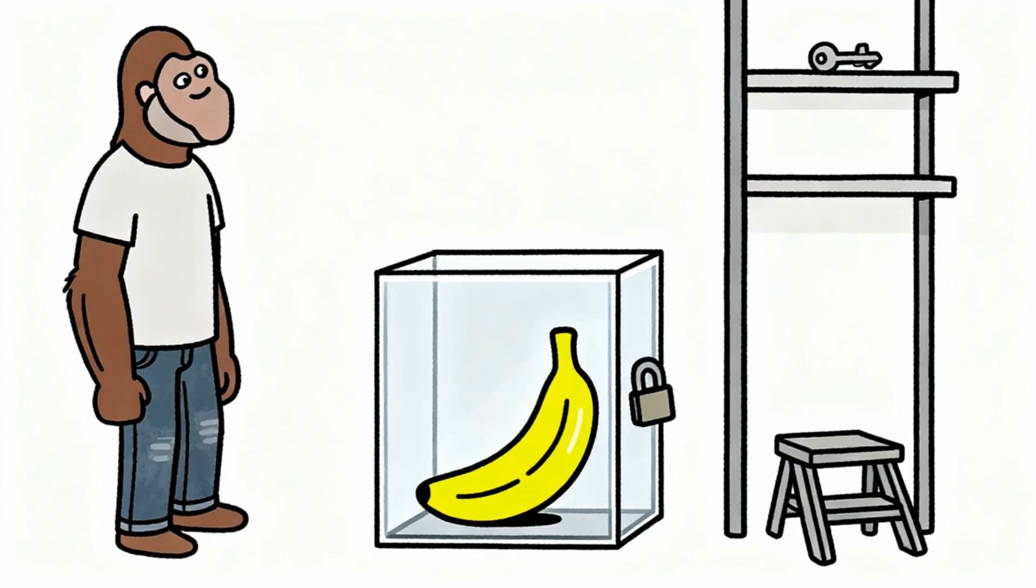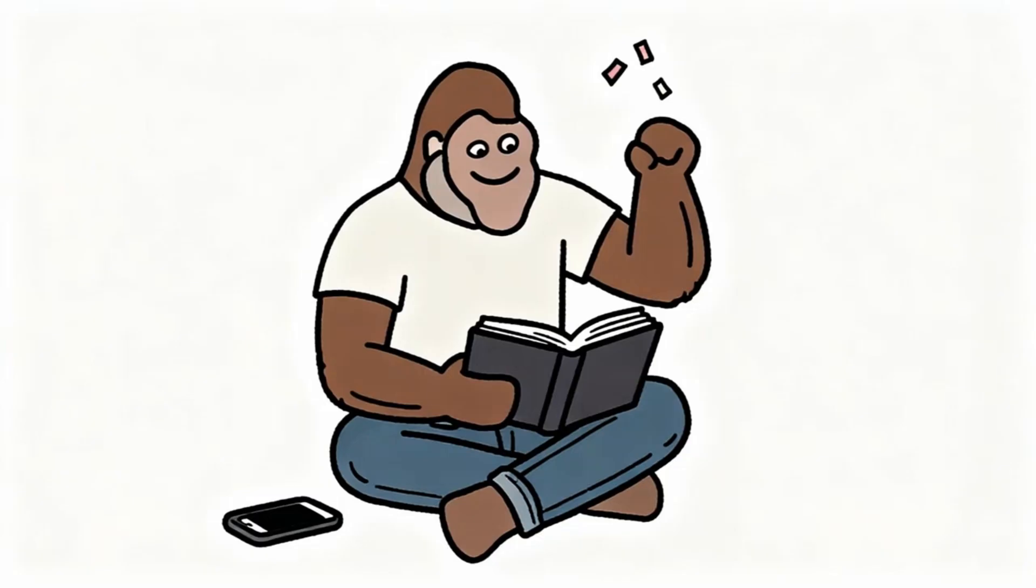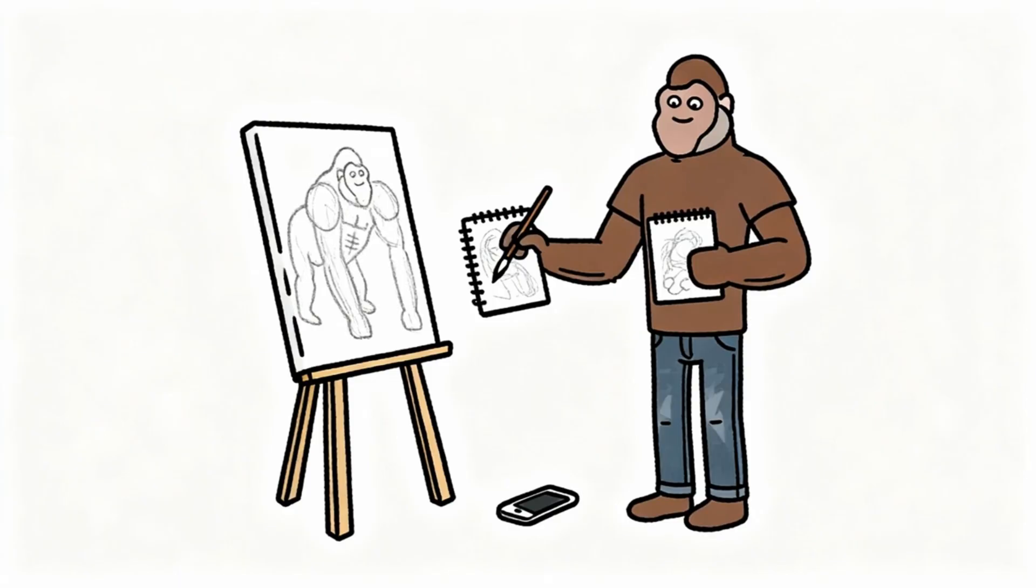Fifth strategy focuses on rebuilding natural reward sensitivity through progressive challenges. Monkey starts with small, difficult tasks that provide real accomplishment when completed. Finishing entire book without distraction becomes achievement worth celebrating. Having phone-free conversation for extended period becomes meaningful milestone. As natural dopamine sensitivity returns, monkey discovers that real achievements feel much better than artificial ones ever did. Completing creative projects provides weeks of satisfaction compared to minutes from social media likes. Developing genuine skill creates lasting confidence compared to temporary validation from online interactions.